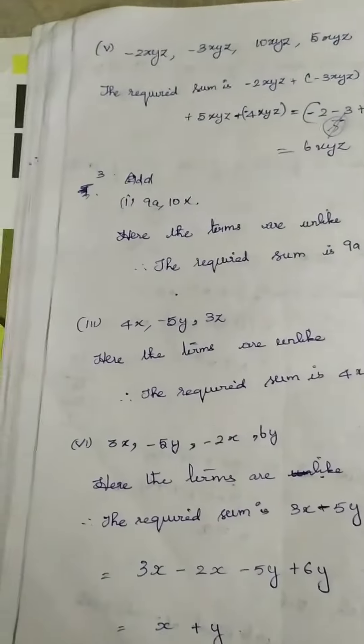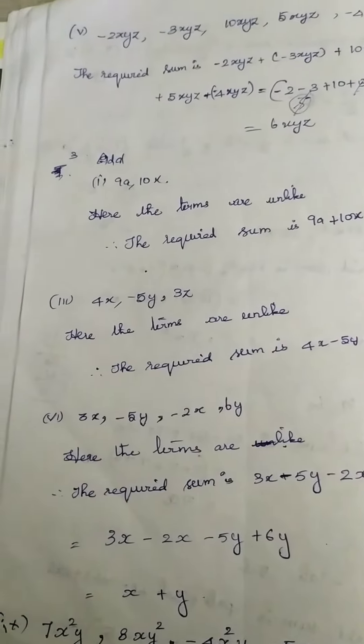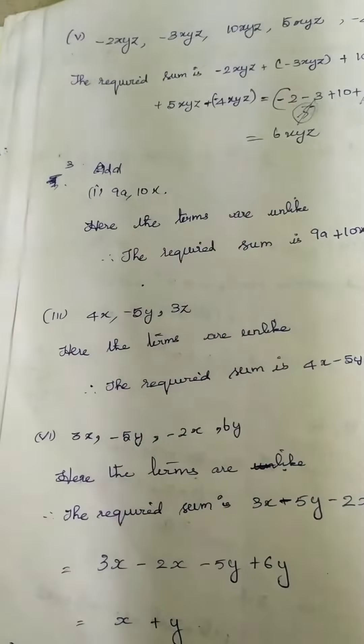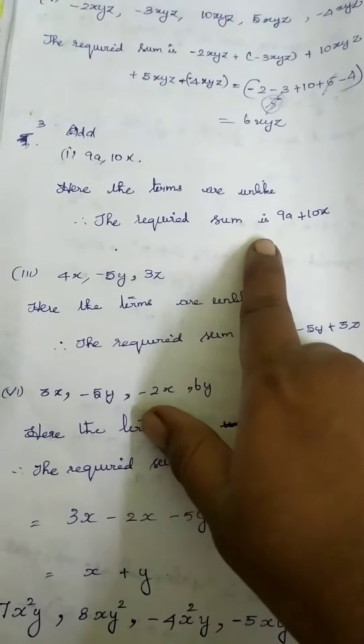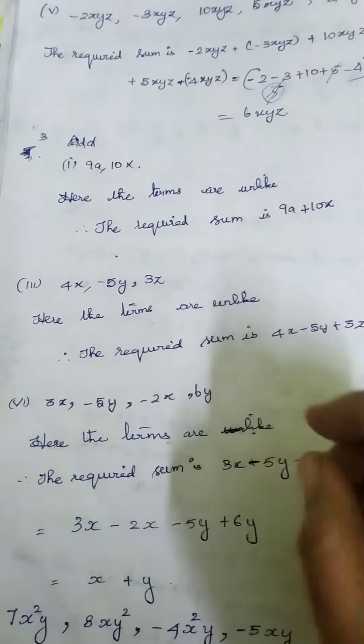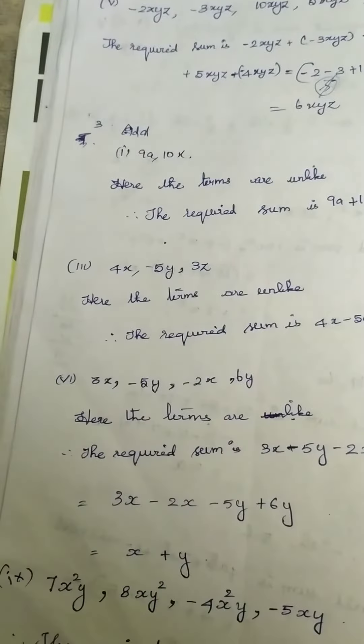So the topic is add. If you have a different variable, unlike terms, we cannot add it. So we call it as unlike terms, and the required sum is 9A plus 10X. We cannot add; we can use only the addition symbol.